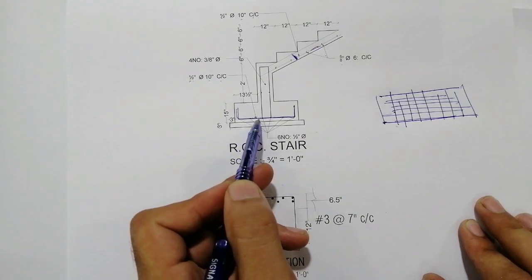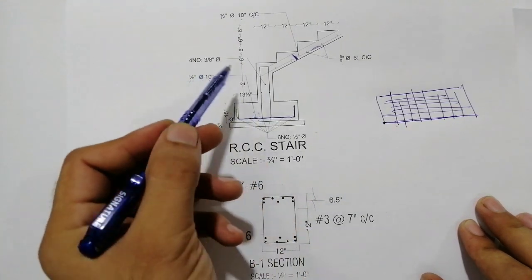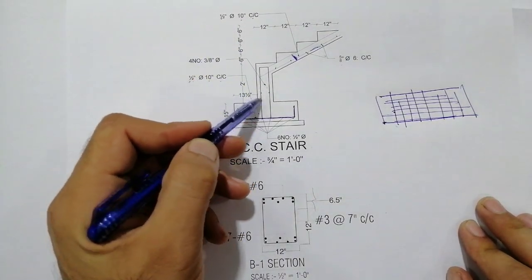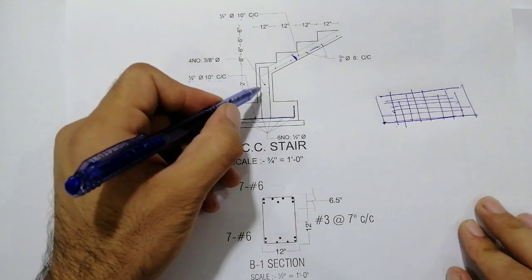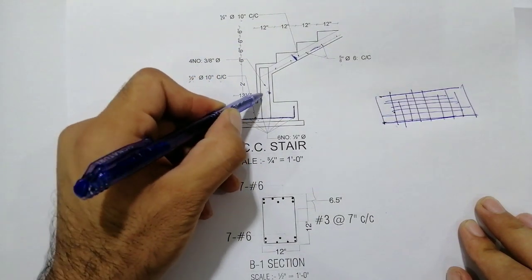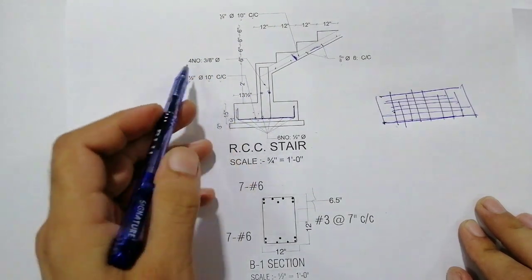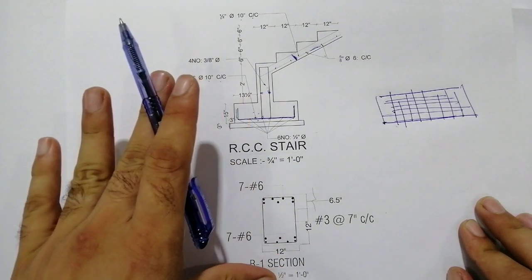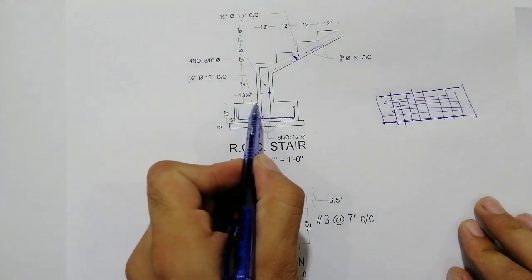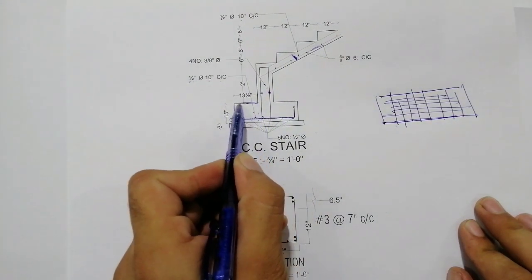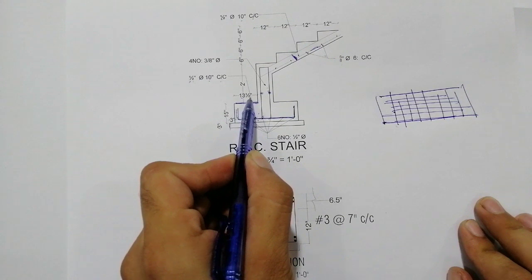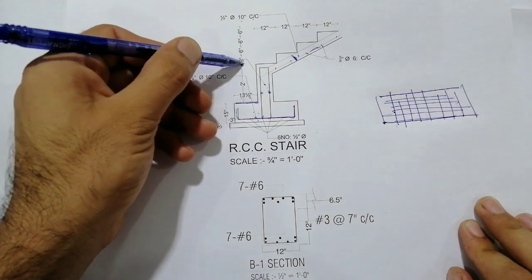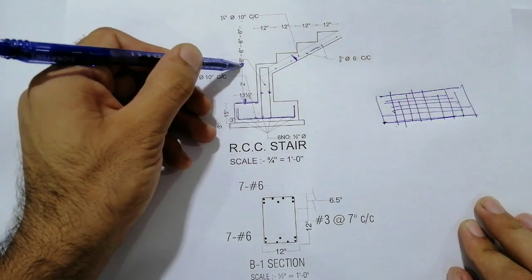Here you can see the distribution bars. There are four numbers of bars - one, two, three, four - with a diameter of three-sutra. The bed is 13.5 inches, and from here to this point for the first straight is two feet.